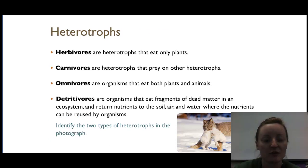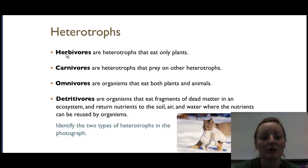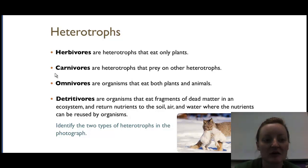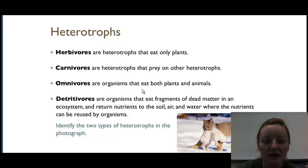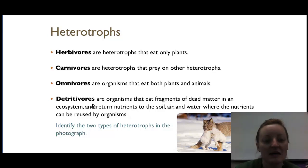Zooming into heterotrophs, we can divide them into categories based on what they eat. Herbivores only eat plants — 'herb' referring to a plant. Carnivores eat other heterotrophs, only meat eaters. Omnivores eat both plants and animals depending on what's available. And detritivores eat dead things, moving nutrients forward in the ecosystem and reusing them in the soil.